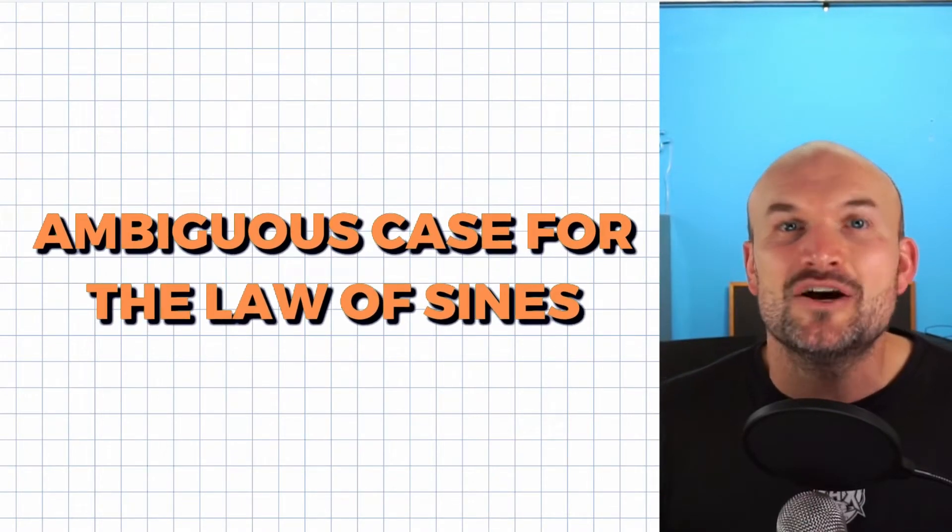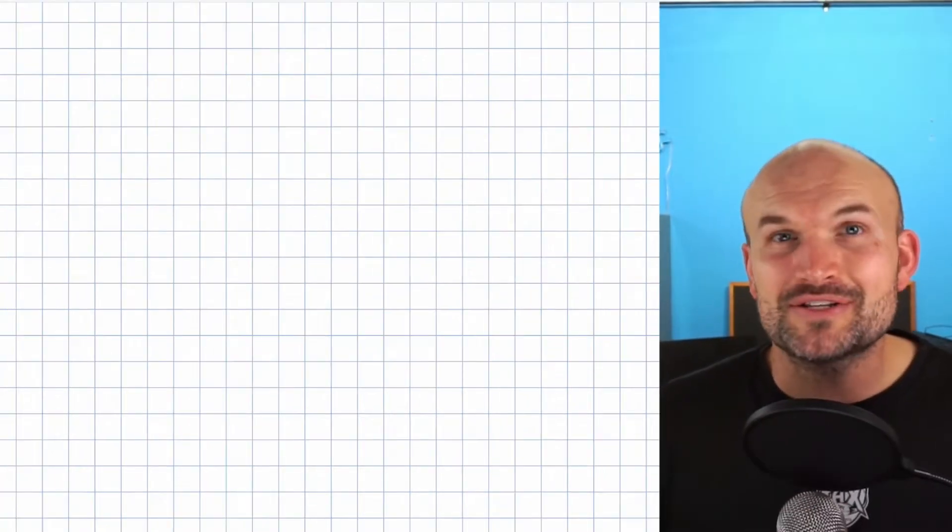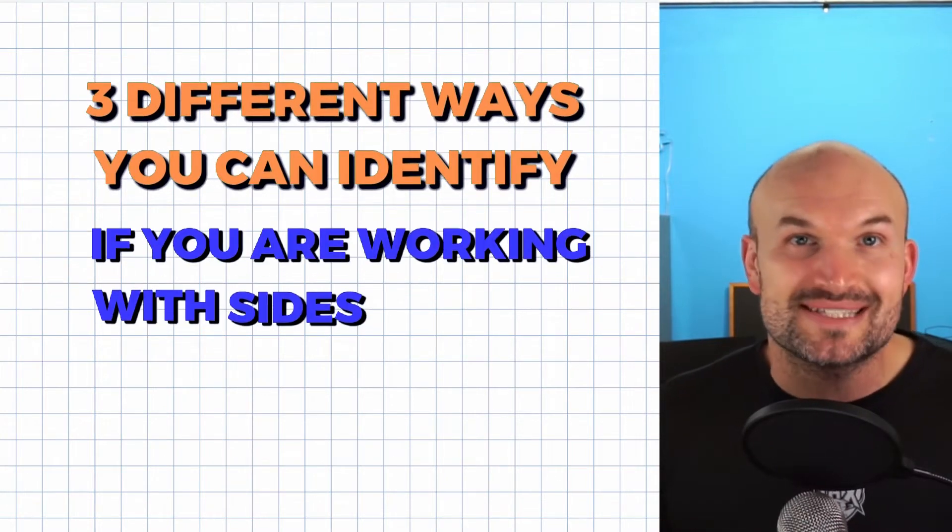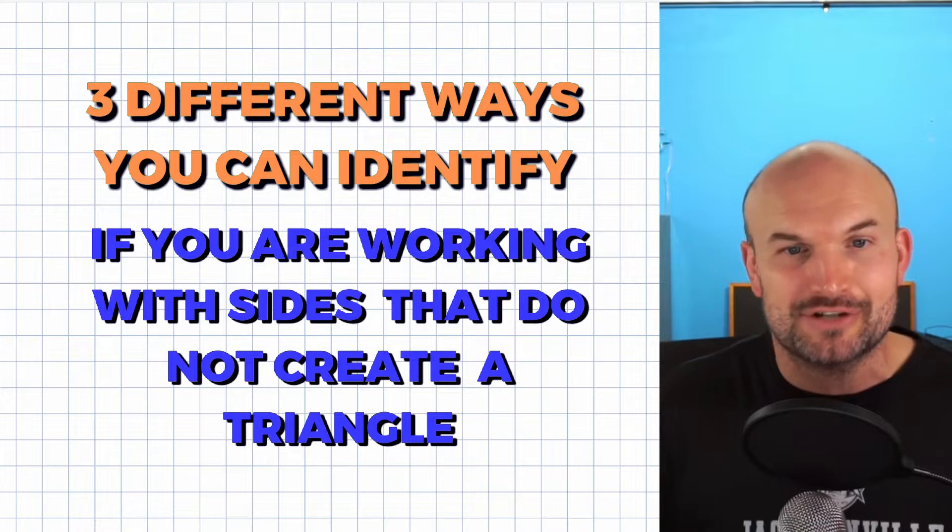One of those things that trips students up time and time again is the ambiguous case for the law of sines, especially the one that doesn't really make sense, which is when there is no triangle. What I want to do in this video is cover three different ways that you can identify if you are working with sides that actually do not create a triangle.